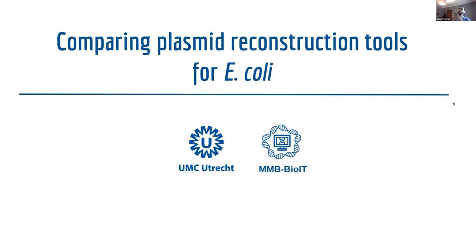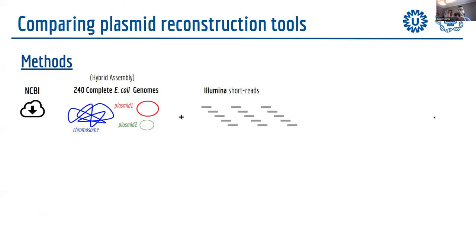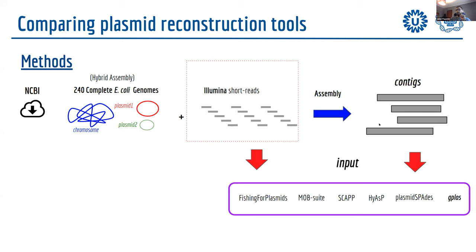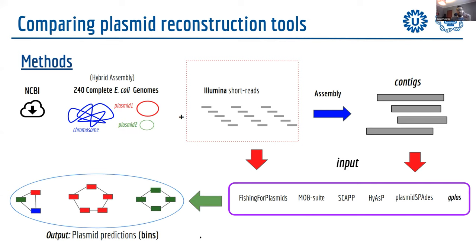Last year we compared how plasmid reconstruction tools work specifically for E. coli. We downloaded 240 complete E. coli genomes from the NCBI public database — assembled using hybrid assembly with both short and long reads — along with the corresponding short reads. We then assembled contigs from the short reads and provided them as input to six different plasmid reconstruction tools, obtaining a set of plasmid predictions (bins) for each tool, which we then compared against the original plasmids.